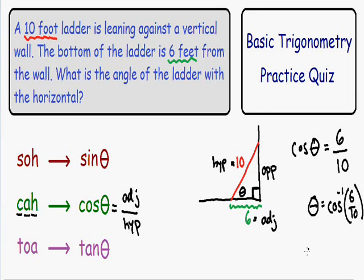And if we plug this into our calculator, make sure your calculator is in degrees and not radians, the inverse cosine of 6 over 10 is equal to 53.1 degrees. So this angle that the ladder makes with the horizontal ground is equal to 53.1 degrees. This is the solution to our word problem.